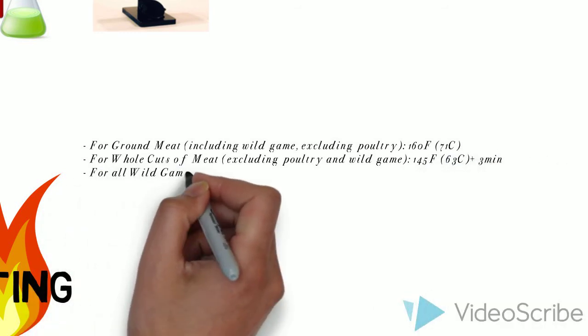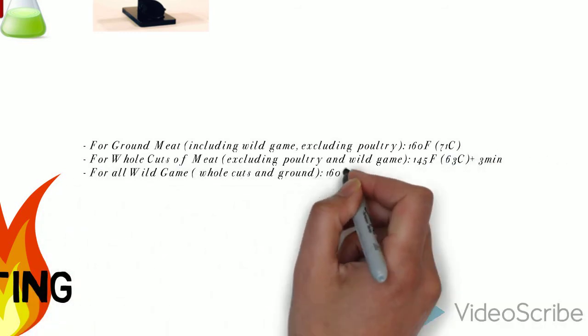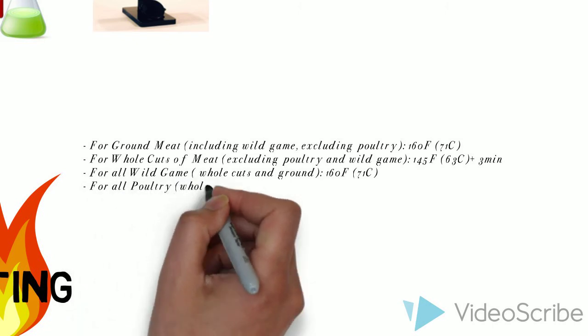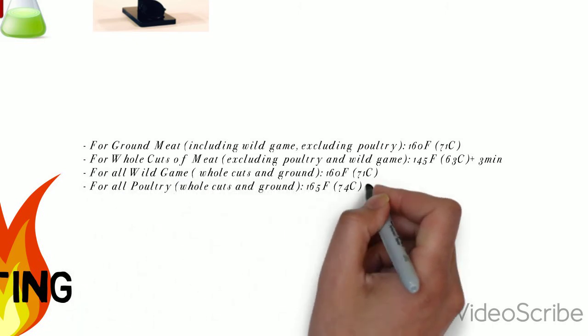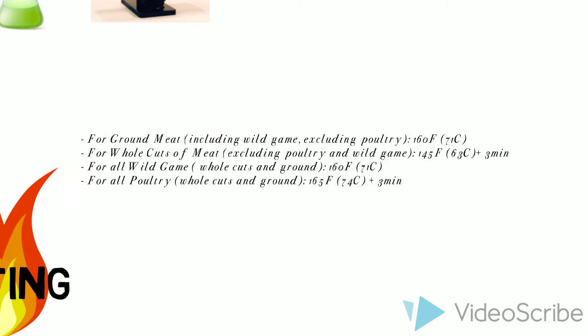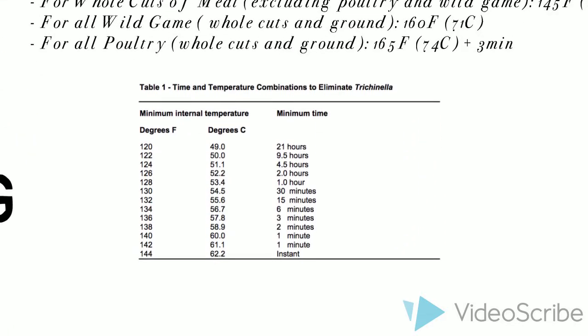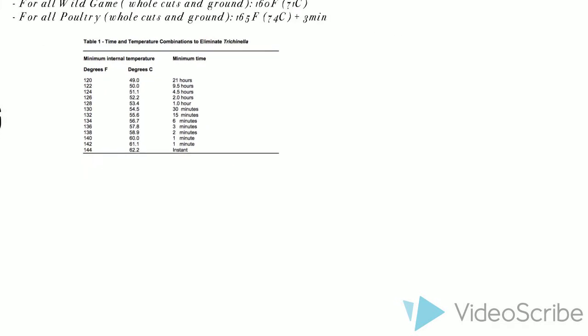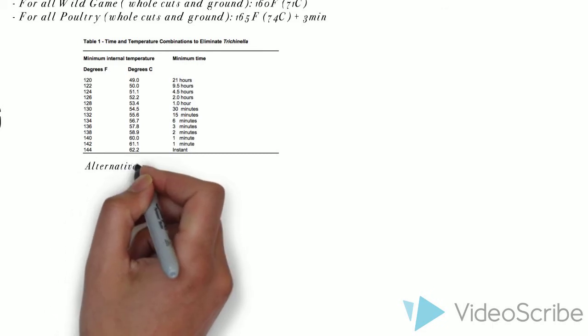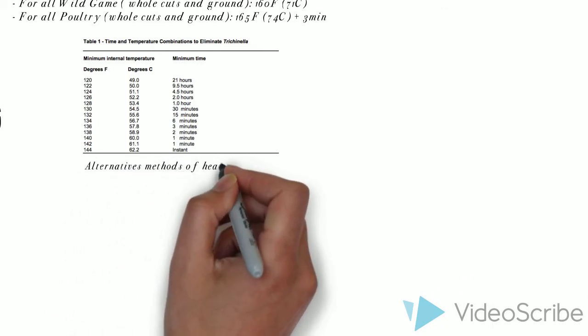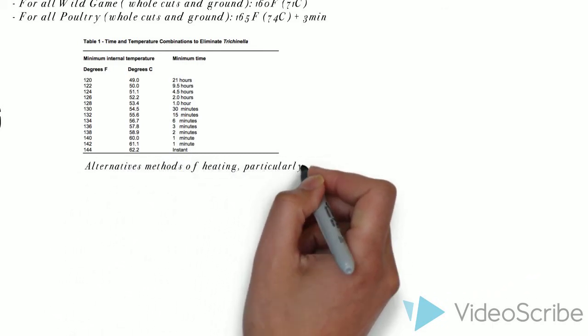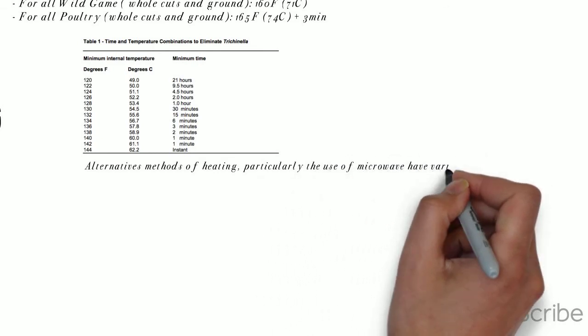Now, I'm going to talk to you about the heating method. So, in order to eliminate Trichinella, all parts of the pork muscle tissue should be heated according to the time-temperature combination shown in this table. A food thermometer should be used to measure the internal temperature of cooked meat. And we know that as an alternative method of heating, some people use microwaves, but it has been shown that it doesn't inactivate the parasite completely.